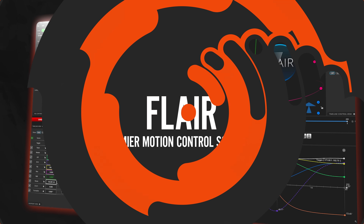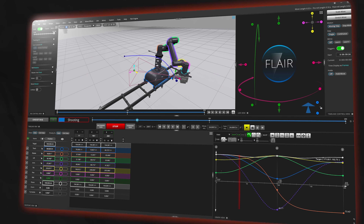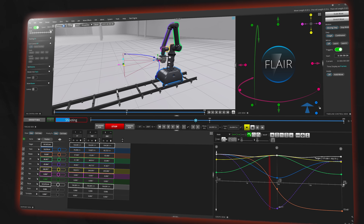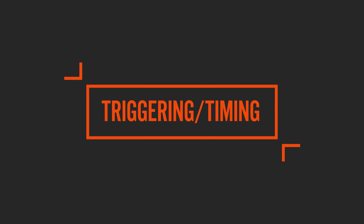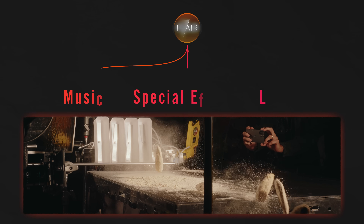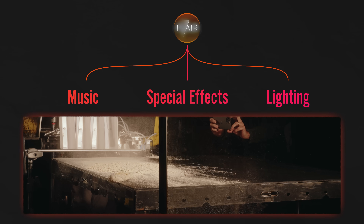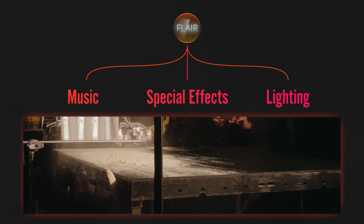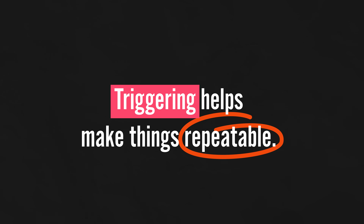Flare is the software that runs it all. Without Flare, it would be really difficult to program these complex camera moves with target tracking. Triggering and timing: Flare acts as the conductor in the symphony so that you can have full control over when things start and stop. The goal with MoCo is to make things repeatable, and triggering helps make complex systems repeatable.